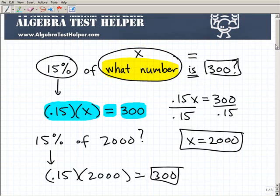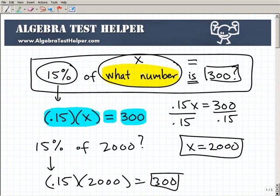As you're supposed to get, right? Because that's what we had right here in the original problem. 15% of what number? Well, now we know that that particular number is 2,000. 15% of 2,000 is 300.